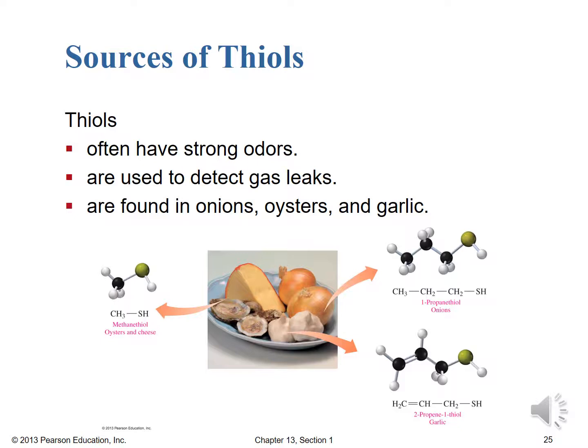Because of their strong odors, thiol-containing compounds are added to natural gas to detect leaks. Natural gas itself is odorless, colorless, and flavorless, so a gas leak would be undetectable without this additive. Humans can detect thiols in very small amounts — that's the important safety feature. When people say they smell natural gas, as a chemist I'd note: you can't actually smell natural gas; what you're detecting is the thiol odorant added to it.